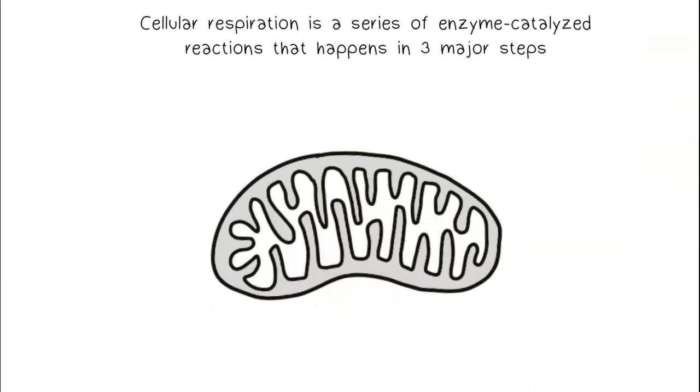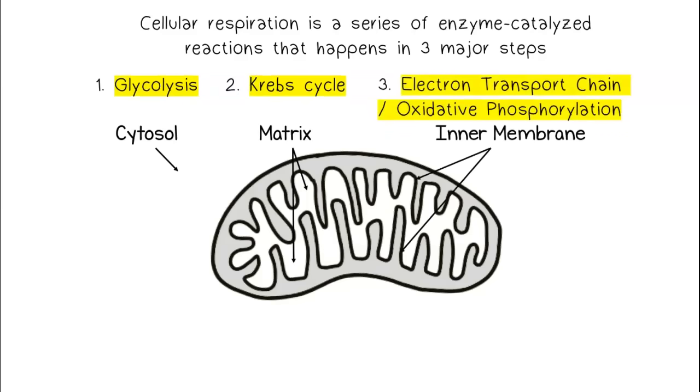Cellular respiration is a series of enzyme-catalyzed reactions that happens in three major steps: glycolysis, which occurs in the cytosol outside of the mitochondria; the Krebs cycle, which occurs in the mitochondrial matrix; and the electron transport chain and oxidative phosphorylation, which occur on the inner membrane of the mitochondria.